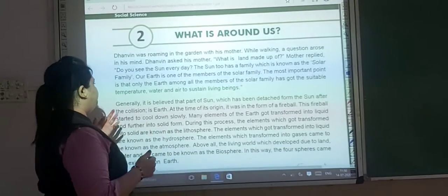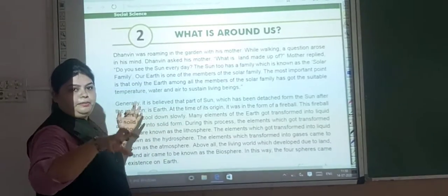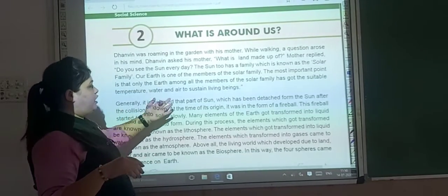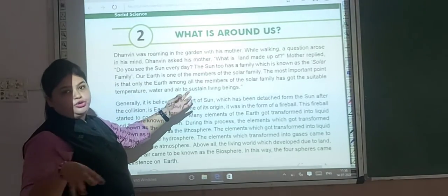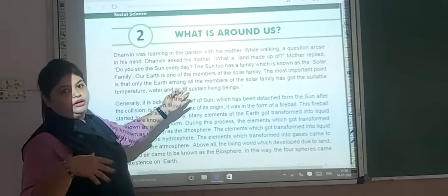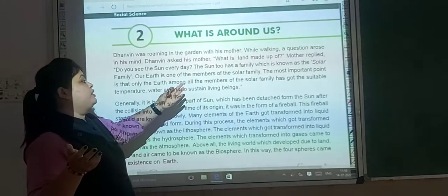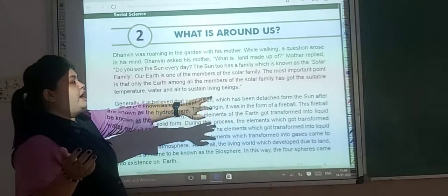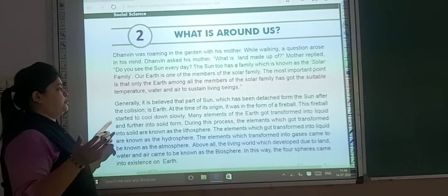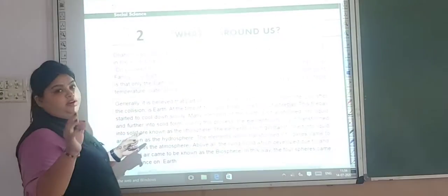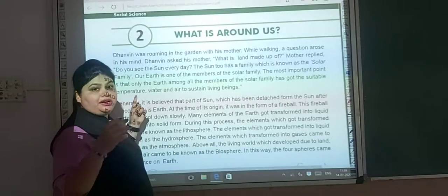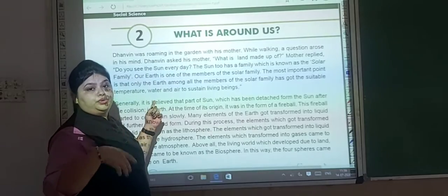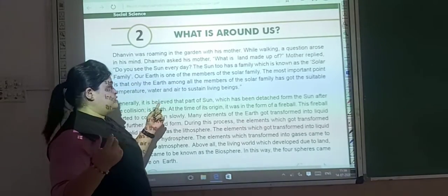Earth is also a member of the solar family. The most important point is that only the earth, among all the members of the solar family, has got suitable temperature, water, and air. There are so many different members — Jupiter and many others — but only earth has these conditions.